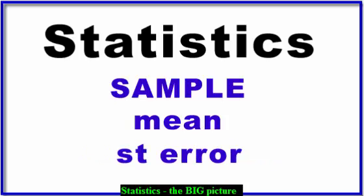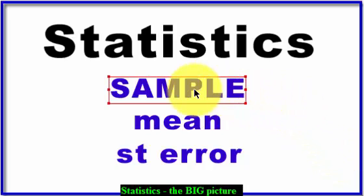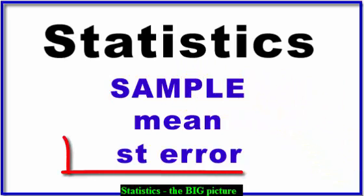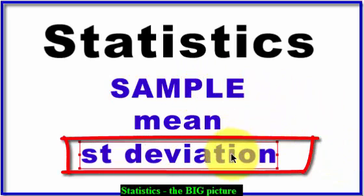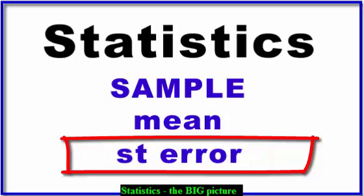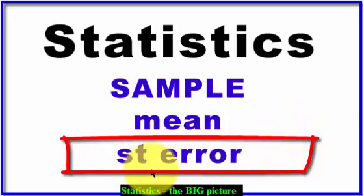You should know that if it's from a sample, you're going to divide that standard deviation by the square root of the sample size, and that's what makes it a standard error.